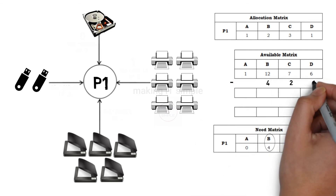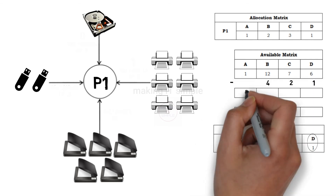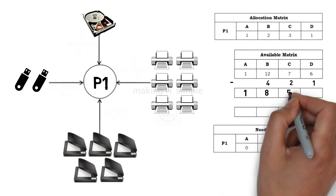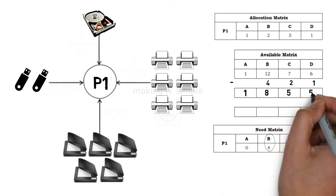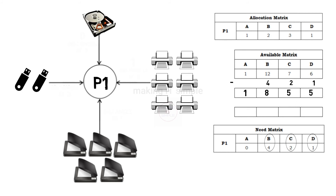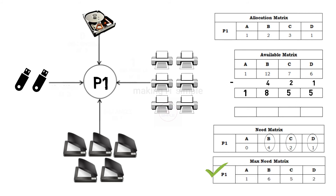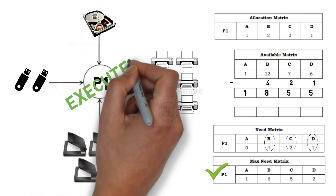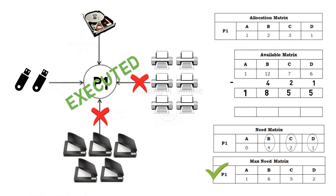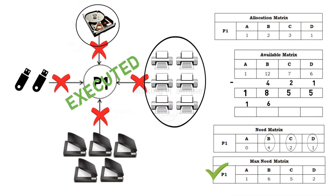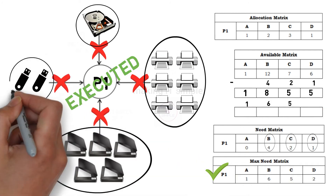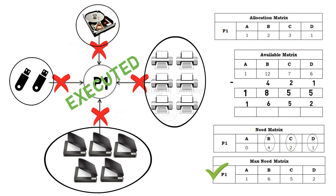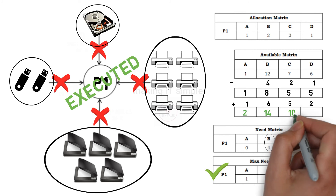So they will get minus from the matrix and we will have 1 instance of resource A, 8 instances of resource B, 5 instances of resource C, and 5 instances of resource D left. As P1 will get its required resources, it will complete its execution, and after completion release the allocated resources. It will release 1 instance of resource A, 6 instances of resource B, 5 instances of resource C, and 2 instances of resource D. So the available matrix will get updated. It will be 2, 14, 10, and 7.